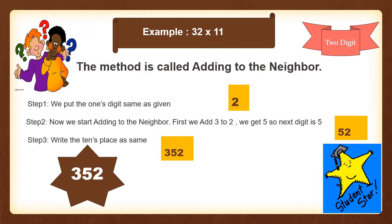In the next step, we add the neighbors — so 3 plus 2 is 5. A very important point is that 5 will come at the 10s place, so we write 5 to the left of 2. And in step 3, we copy the 10s place, that is 3, as it is. So the answer is 352.